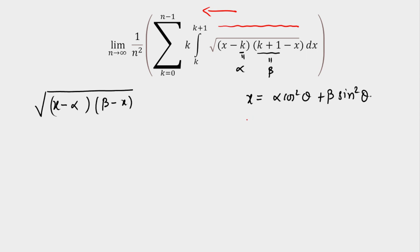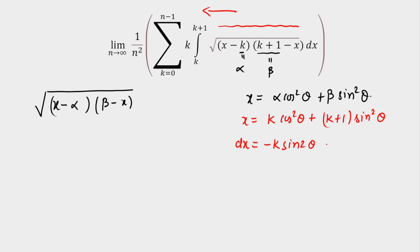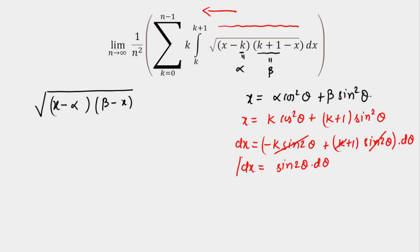I need to find x and dx after substitution. So x equals k·cos²θ plus (k+1)·sin²θ. Now dx: differentiation of cos²θ is minus sin 2θ, so we get minus k·sin 2θ, and the differentiation of sin²θ gives plus sin 2θ. These k terms cancel and we directly get dx = sin 2θ dθ.